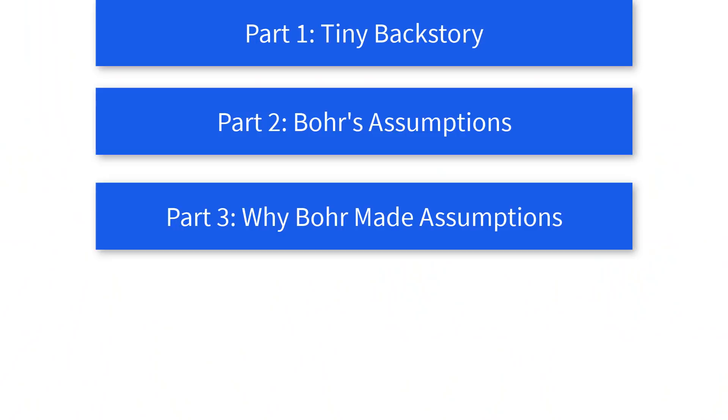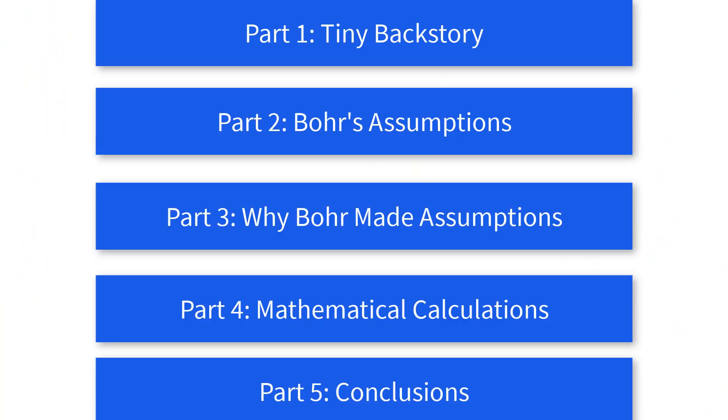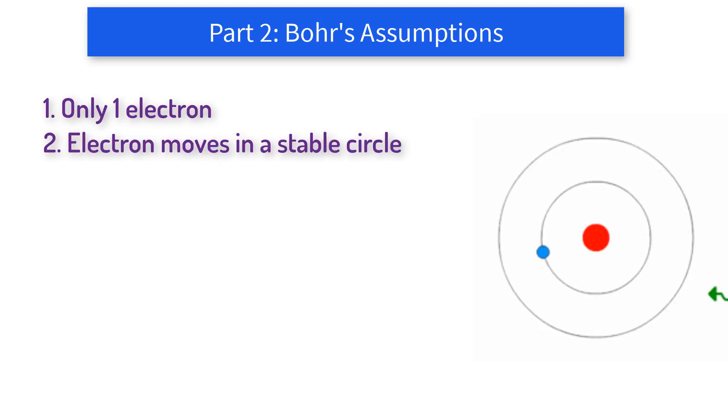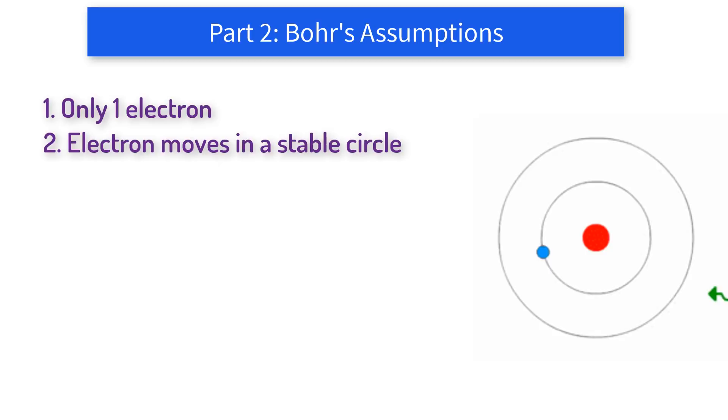Bohr made six assumptions in his July 1913 paper. One, in this first paper he only dealt with systems with one electron. Two, the electron spins around the nucleus in a stable orbit which he assumed to be a circle. Three, the electron can only circle around the nucleus at set positions, although the electron can magically jump between one state to another in a quantum leap. And four, the energy of light produced is equal to the change in energy of the electron as it jumps between states.